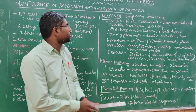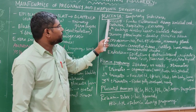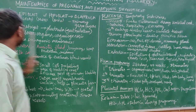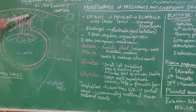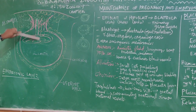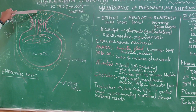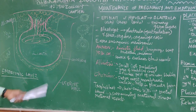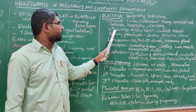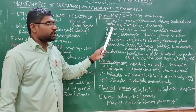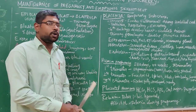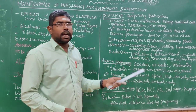The placenta is a temporary endocrine organ. The fetus connects to the uterine wall by means of the umbilical cord. Through this connection, nutrition is provided to the fetus. The weight and nourishment of the fetus is maintained through this system.